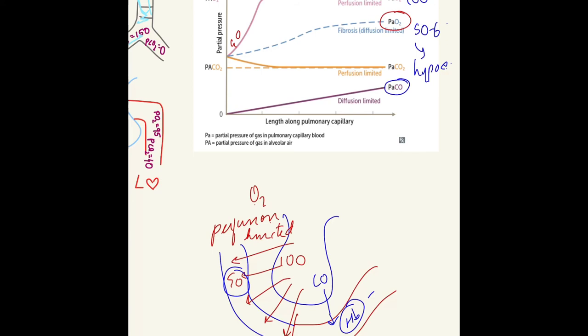Carboxyhemoglobin does not exert any partial pressure. So the partial pressure of carbon monoxide does not increase in the capillaries. As a result, the partial pressure doesn't equalize, and there is a constant flow of carbon monoxide from the alveoli into the capillaries. This is diffusion limited.